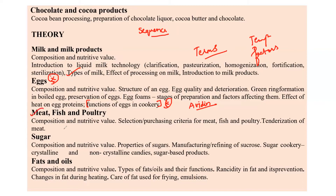Coming to meat, fish, and poultry — combination-type or sequence-type questions related to nutritional capacity, different selection criteria, and standard purchase procedure when buying meat, fish, or poultry can be expected. There is also tenderization: enzyme-related questions come up here, such as papain and bromelain being used for tenderization of meat.